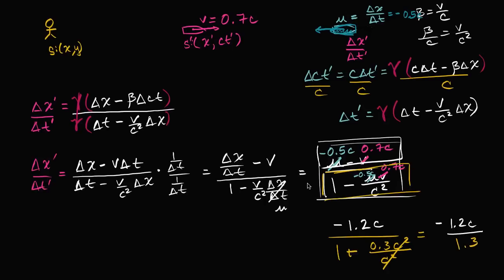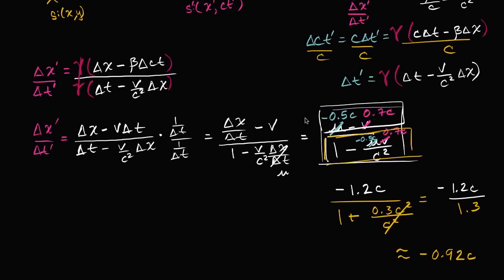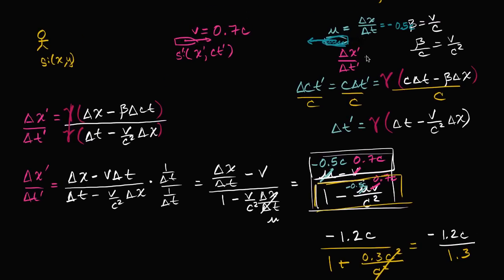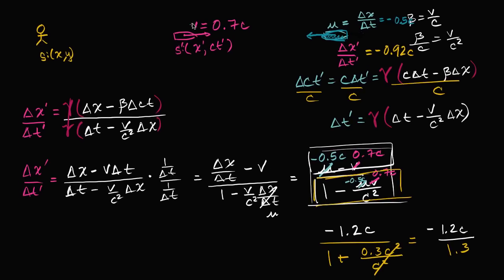Which is cool. So this delta x prime over delta t prime is negative 0.92c. So it makes sense that from our friend's frame of reference, this ship will look like it's approaching her faster than from my frame of reference it looks like it's approaching me. In my frame of reference, it looks like it's coming to me at half the speed of light. In her frame of reference, it looks like it's coming at 0.92 times the speed of light. The negative is just specifying the direction.